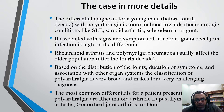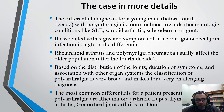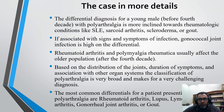Rheumatoid arthritis and polymyalgia rheumatica usually affect the older population after the fourth decade. Based on the distribution of the joint, duration of symptoms, and association with other organ systems, the classification of polyarthralgia is very broad and makes for a very challenging diagnosis. The most common differentials for a patient presenting with polyarthralgia are rheumatoid arthritis, systemic lupus, Lyme disease, septic arthritis, gonococcal joint arthritis, or gout.